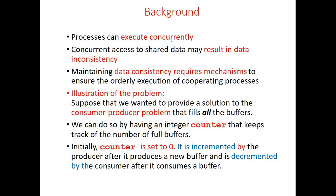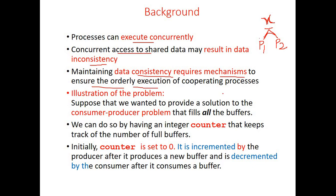Generally, processes execute concurrently — more than one process executes in the system at the same time. When processes execute concurrently, they may access shared data, which might result in inconsistency. If x is a common variable shared by two processes, when process P1 and process P2 try to modify x, this might result in inconsistency in the final value of x. We need a mechanism to ensure that cooperating processes perform execution such that the final outcome is equivalent to execution in an orderly fashion.